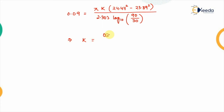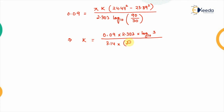Solving: k = 0.09 × 2.303 × log₁₀(3) / [π × (24.47² − 23.89²)]. The coefficient of permeability comes out to be 1.121×10⁻³ meters per second.